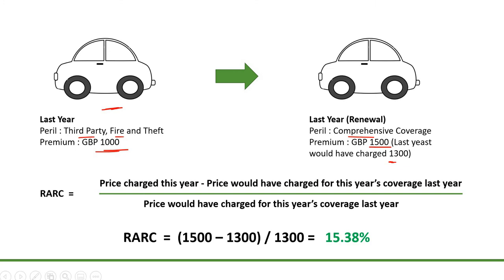Now let's look at the RARC calculation. The price charged this year is 1,500 GBP, and the price that would have been charged for the same comprehensive coverage last year — keeping inflation in mind — would have been 1,300 GBP. So the formula is: (price charged this year minus what you would have charged last year for similar coverage) divided by what you would have charged last year. That gives us (1,500 minus 1,300) divided by 1,300, which equals 15.38%.